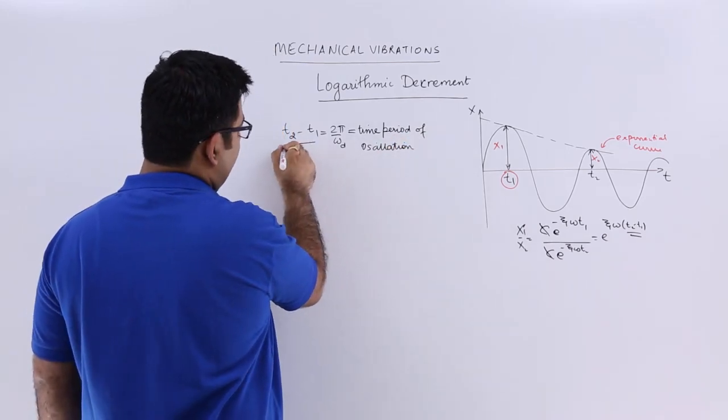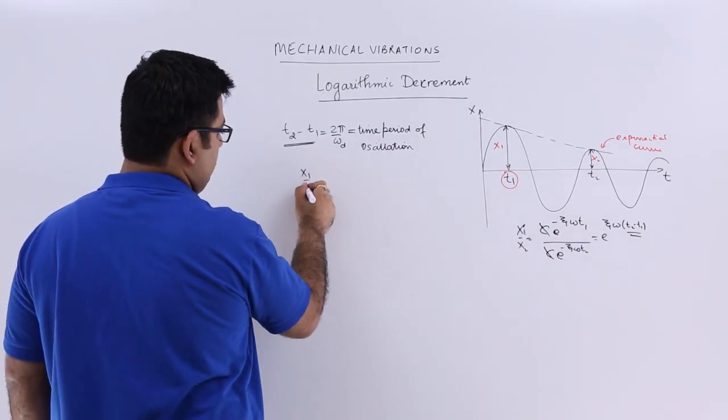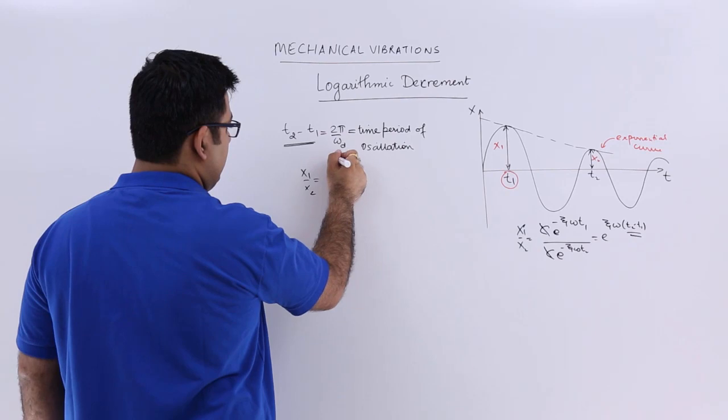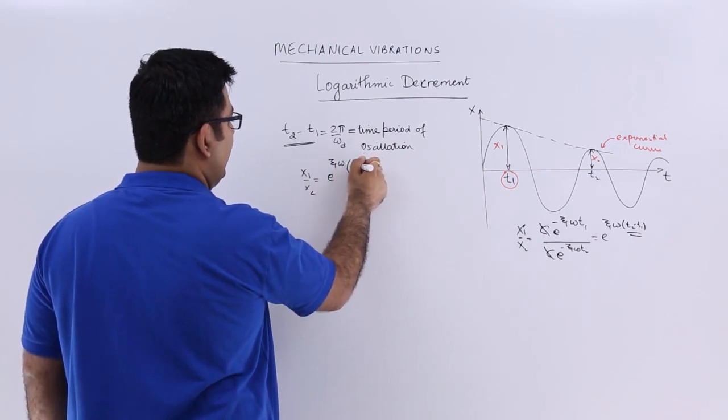If we substitute this in the equation, we get x₁/x₂ equals e^(ζω·2π/ωd).